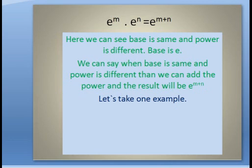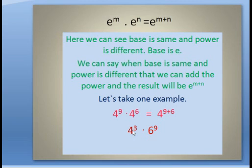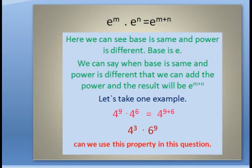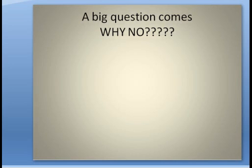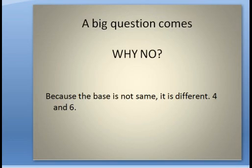Let's take one example: 4 to the power 9 into 4 to the power 6 is equal to 4 to the power 9 plus 6. We can write this from the formula. Now another example: 4 to the power 3 into 6 to the power 9 — can we use this property here? No, because the base is not the same; it is different, 4 and 6. That's why we will not use this formula in this question.